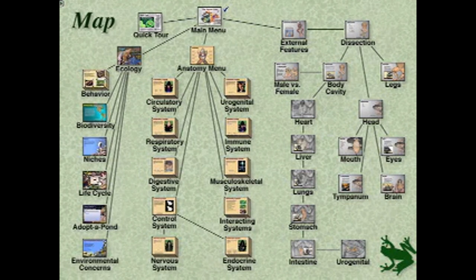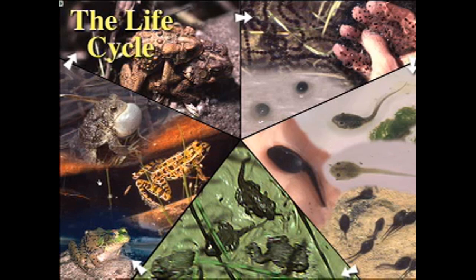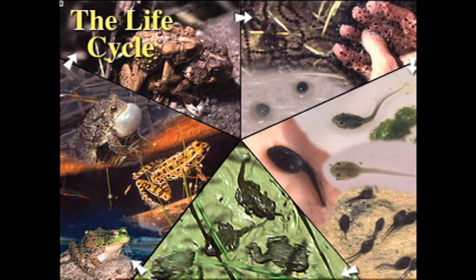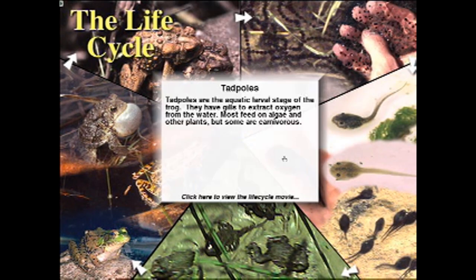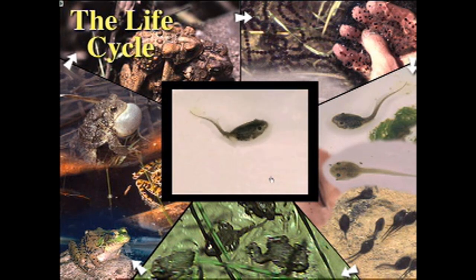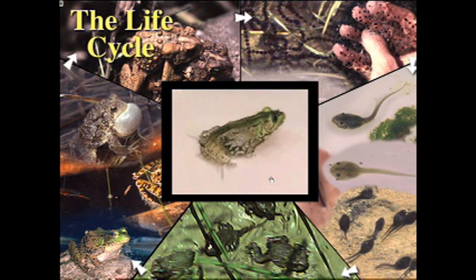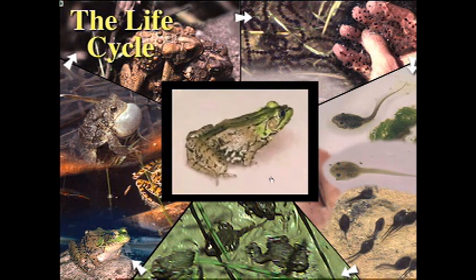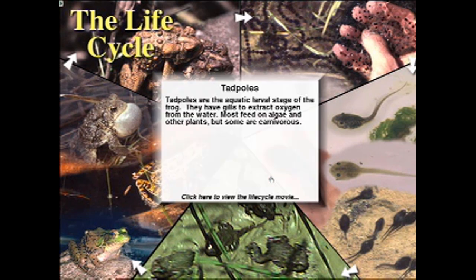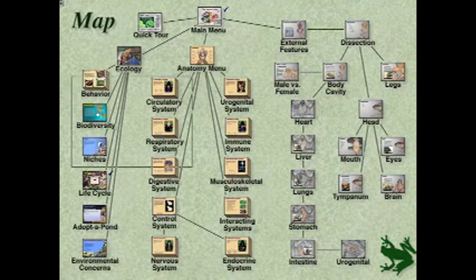Before we start dissecting, you have to see some of my favorites here. Here's the life cycle of a frog — the eggs, the tadpoles, and the juveniles. Click here to see the life cycle movie. An egg turns into a tadpole, turns into a frog. It's metamorphosis in five seconds or less.